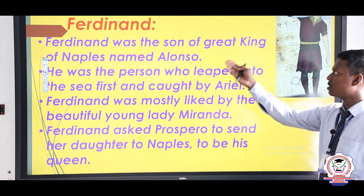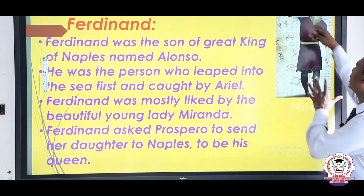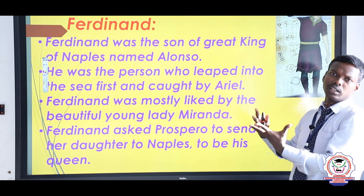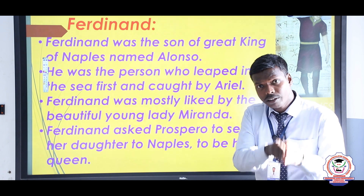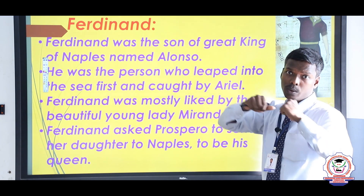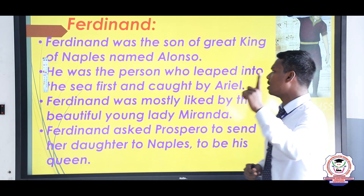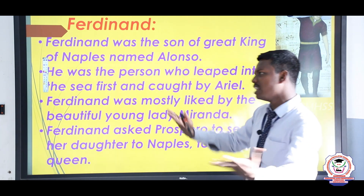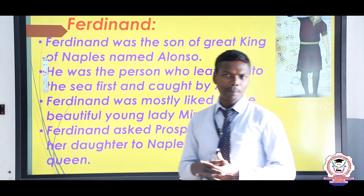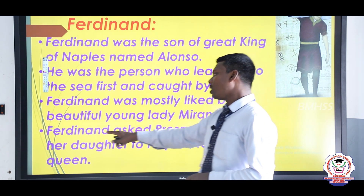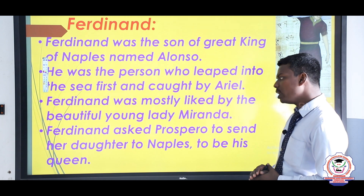Ferdinand was the son of the great King of Naples, Alonso. He does not look like a typical prince — we see him carrying a log over his shoulder, because as soon as he was caught by Ariel, the chief spirit, he was ordered by Ariel to carry out tasks given by Prospero. He was the first one to be brought in and helped safeguard the mariners. Miranda was the first person other than her father that Ferdinand met, and they fell in love. Ferdinand asked Prospero to send his daughter to Naples to be his queen.